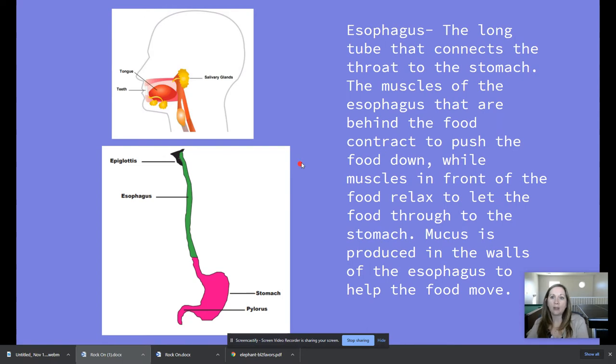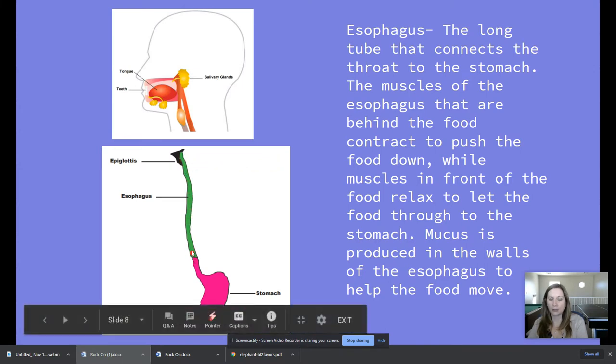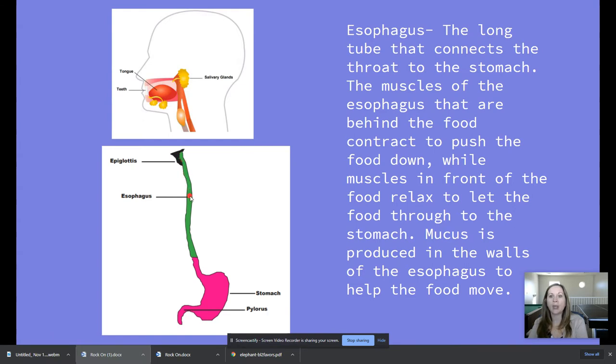Now then it goes in the esophagus. This is the long tube that connects the throat to the stomach. So it's green here in this picture. Obviously it's not green in your body. This is just a diagram. And the muscles of the esophagus that are behind the food contract to push the food down while muscles in front of the food relax to let the food go through to the stomach.